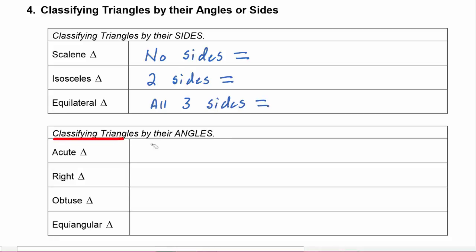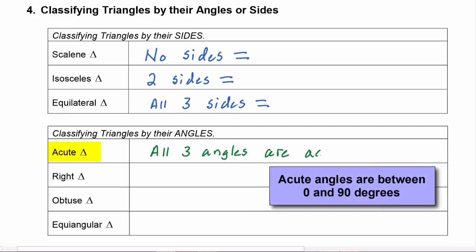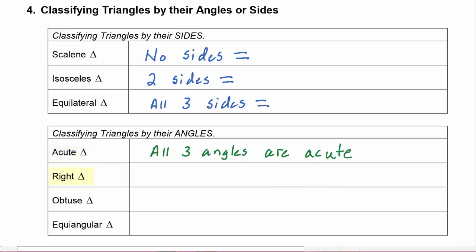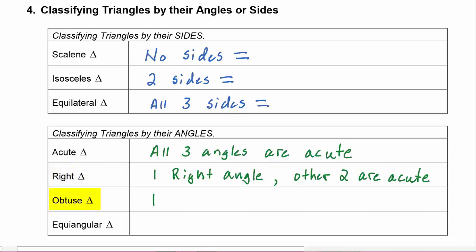Classifying triangles according to their angles, we have four types. First is acute: an acute triangle means that all three angles are acute. A right triangle means that it has one right angle, and then of course the other two would have to be acute. A triangle can be obtuse, meaning it would have one obtuse angle, and again the other two are acute.